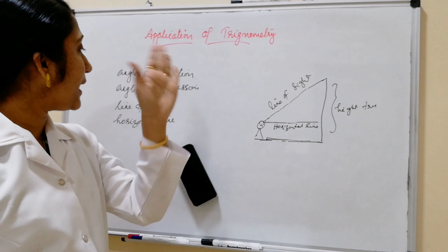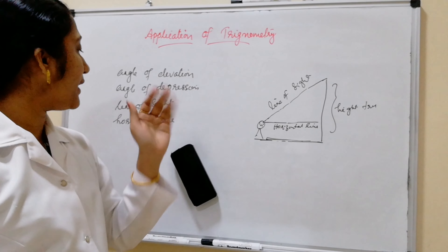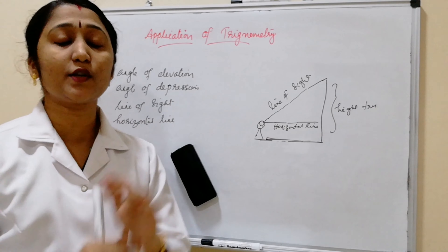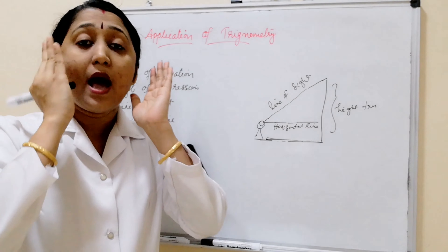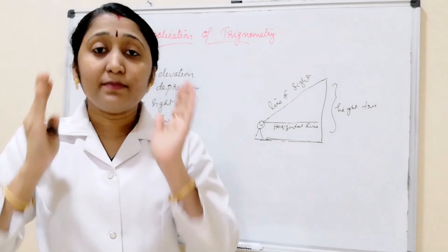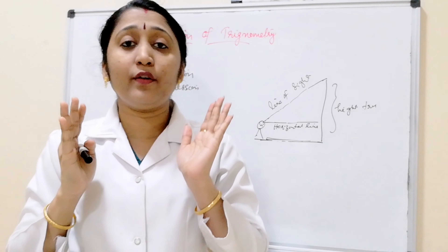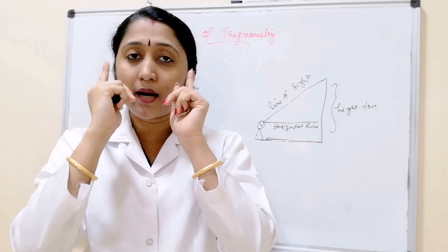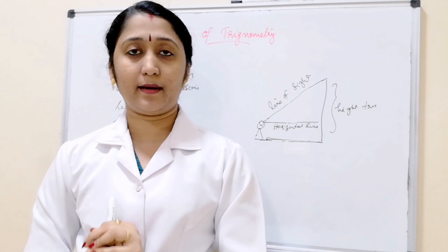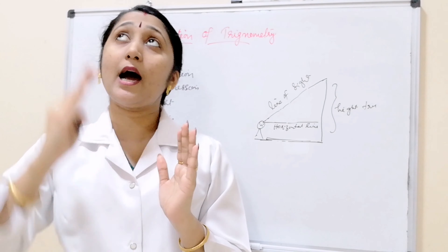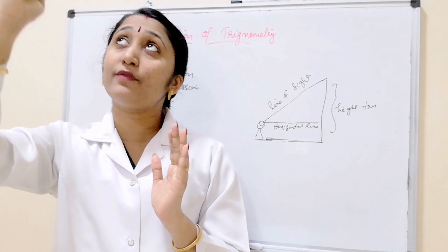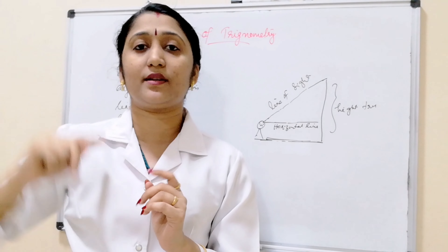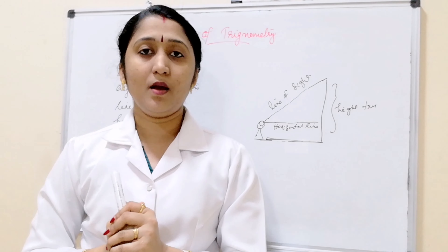So what is the line of sight? If I am standing in front of you and watching straight, that is called the horizontal line. If I am seeing the top of the tree, that is the line of sight.